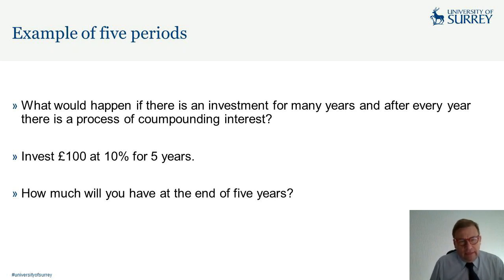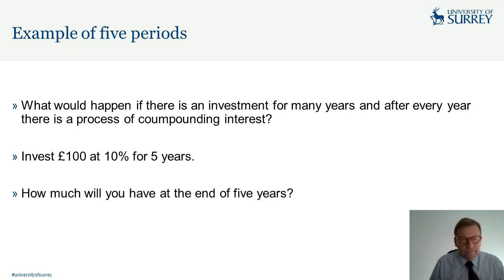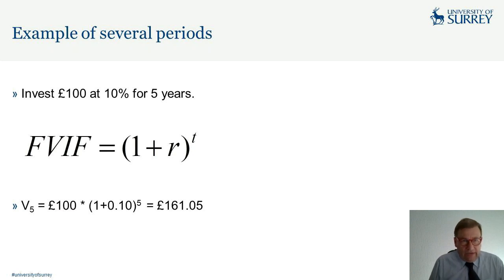The result: 100 × (1.1)^5 = £161.05. I'm sure everybody has the same answer.